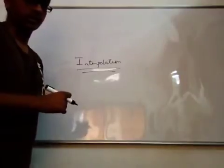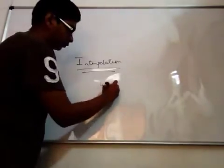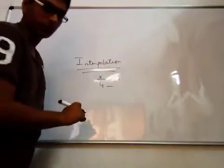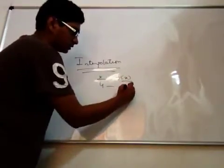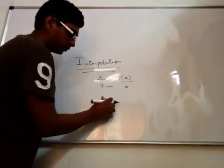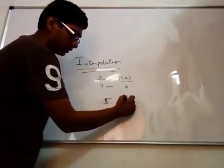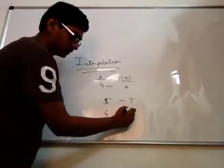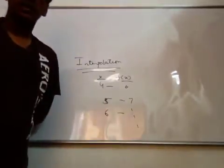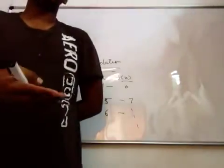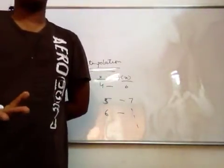For example, we have some data like when x is equal to 4, f of x is 6, and when x is equal to 5, f of x value is 7. When it is 6, you have a table. Then, with the process of interpolation, we can acquire more values.